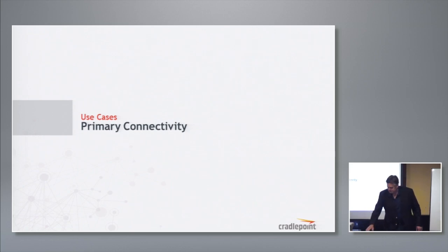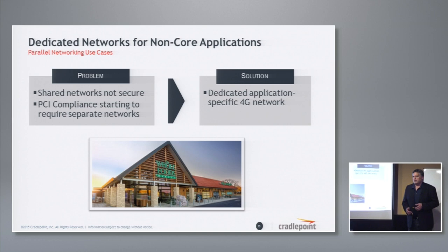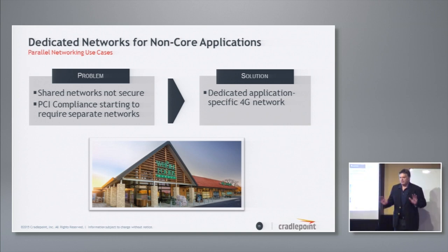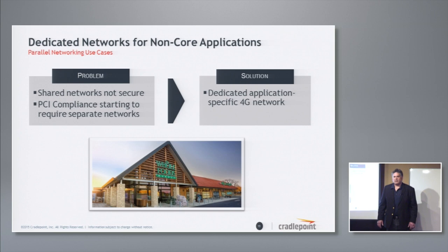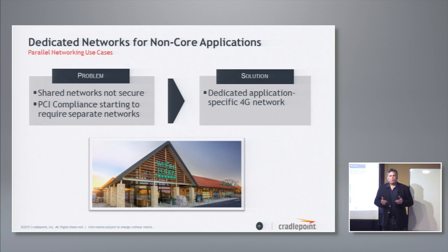First is what I call parallel networking — the notion of having a dedicated network for non-core applications. Grocery stores want to have customer Wi-Fi, and after the Target breach, a lot of them don't trust logical partitioning or logical network segments. PCI compliance with the 3.1 spec is starting to call out requirements for putting certain applications on parallel networks. In this example, we're helping customers create customer Wi-Fi using 4G as the backhaul, and none of it goes through their corporate network or data center — it's completely separate.